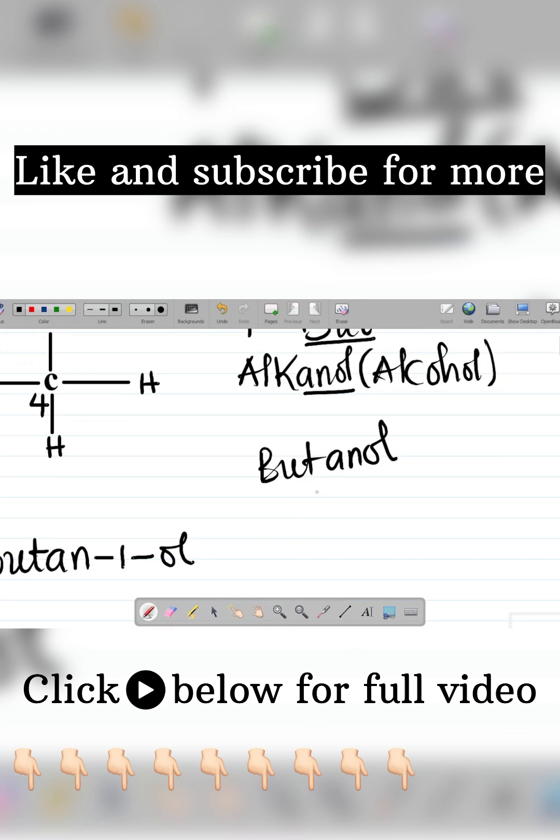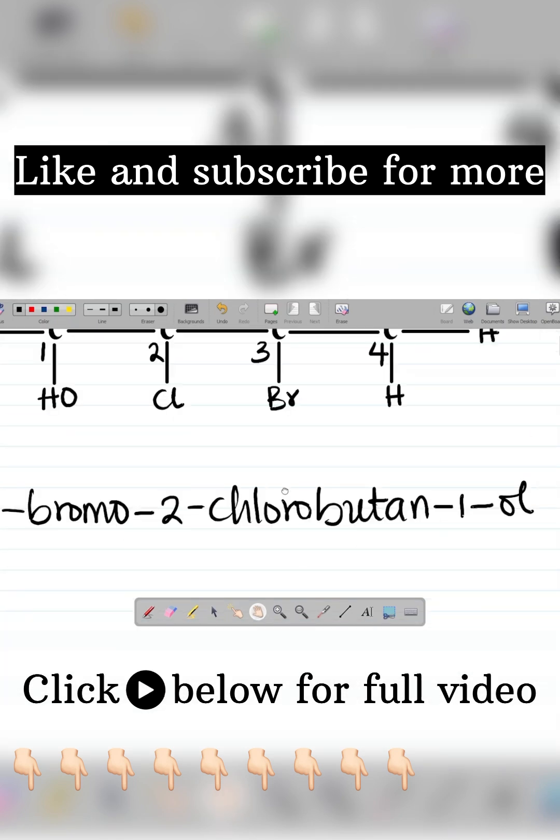group is attached, which is carbon one, we now have to separate this. This way it becomes butan-1-ol, and that's what we have here. So the name of this compound is 3-bromo-